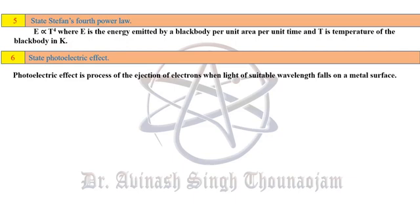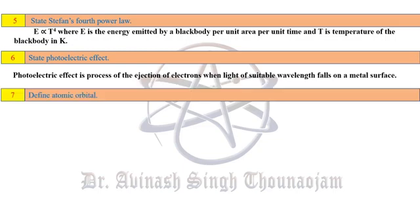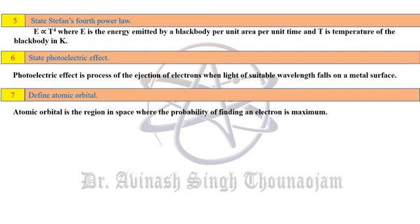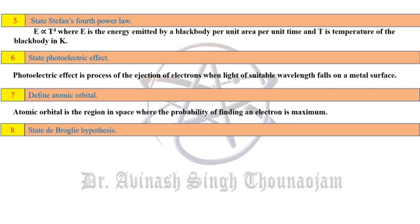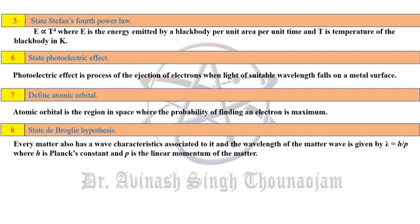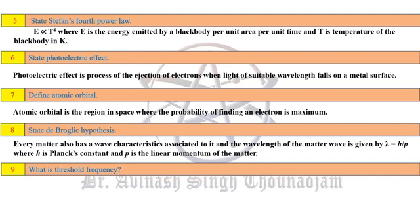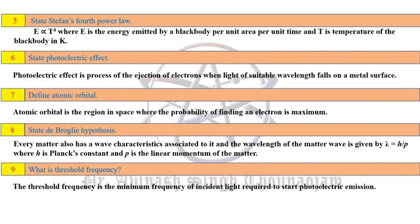Photoelectric effect is the process of ejection of electrons when light of suitable wavelength falls on a metal surface. Atomic orbital is the region in space where the probability of finding an electron is maximum. De Broglie's hypothesis: every matter has a wave character, and the wavelength of that matter wave is given by λ = h/p, where h is Planck's constant and p is the linear momentum of the matter.